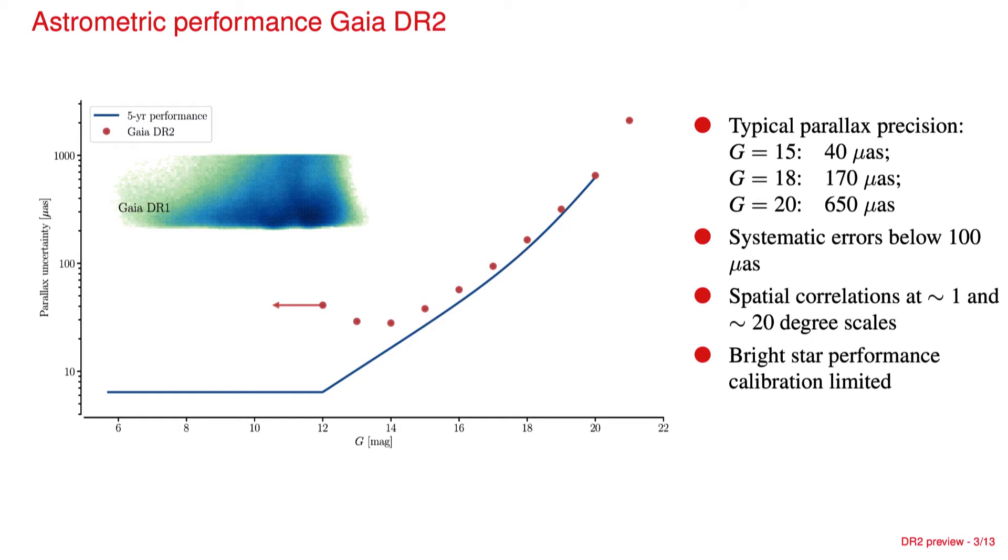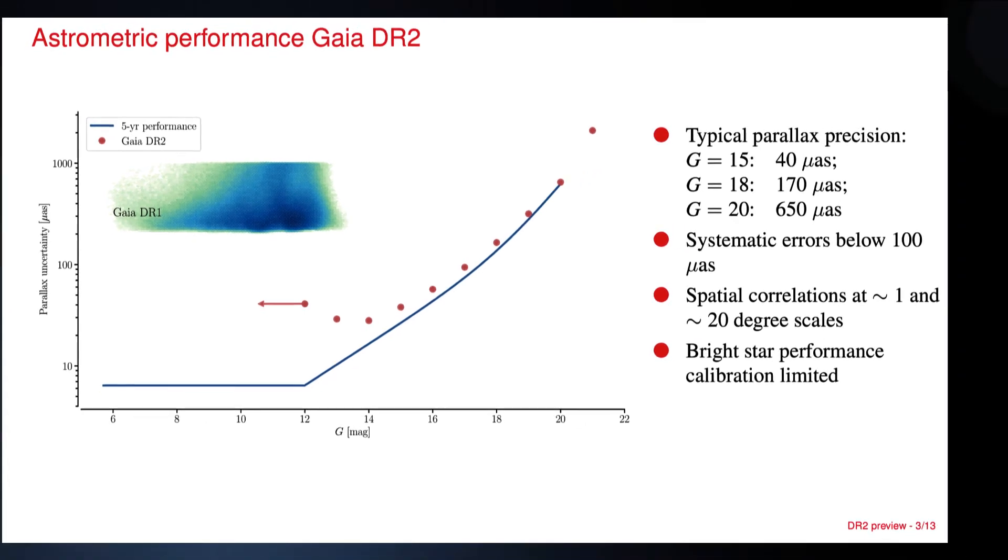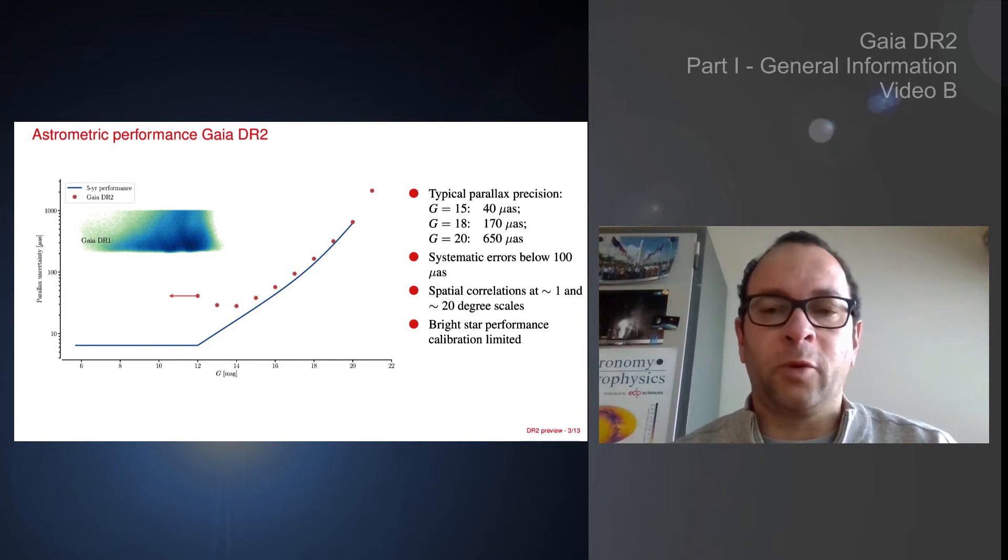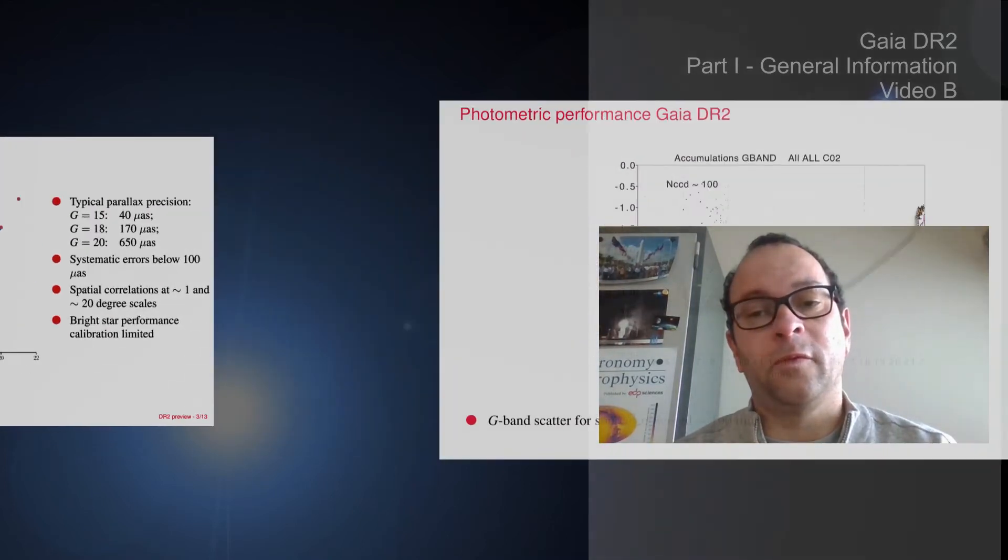This plot shows really a dramatic expansion of the availability of high accuracy astrometric data for our Milky Way. The line shows the prediction for a five-year mission, and this coincides almost with some of the dots for DR2 at the faint end, probably because we have been a little bit pessimistic with the assessment of the effect of stray light on the performance.